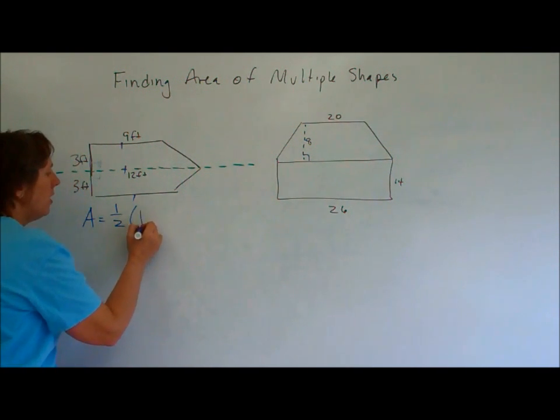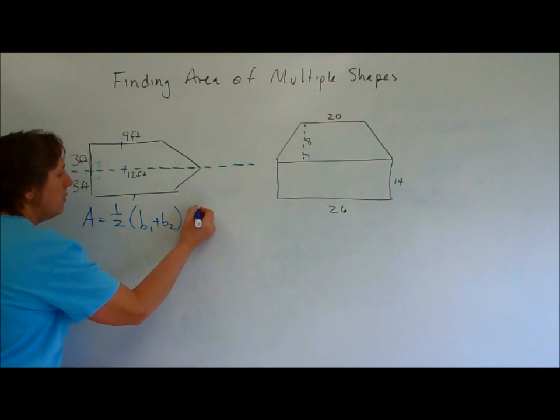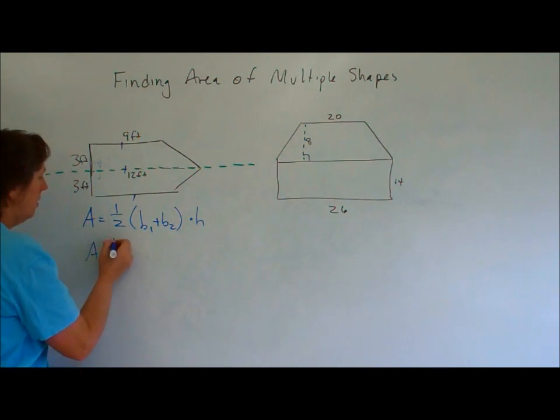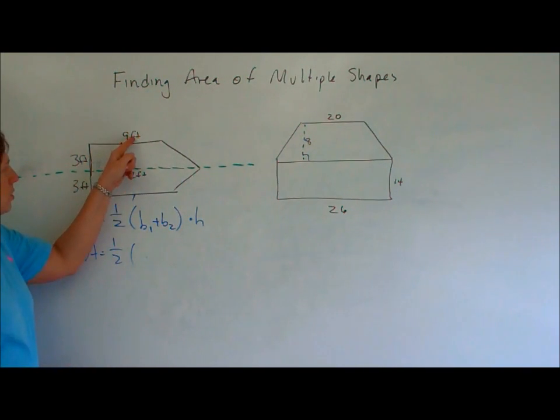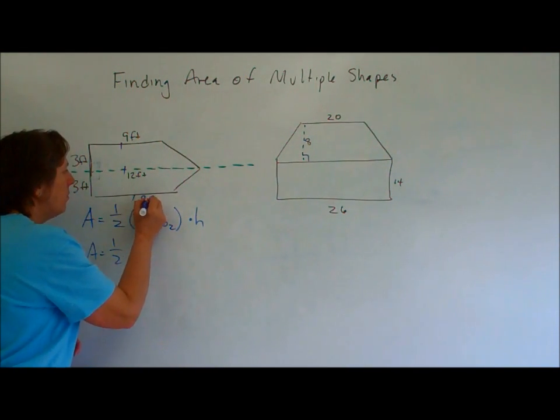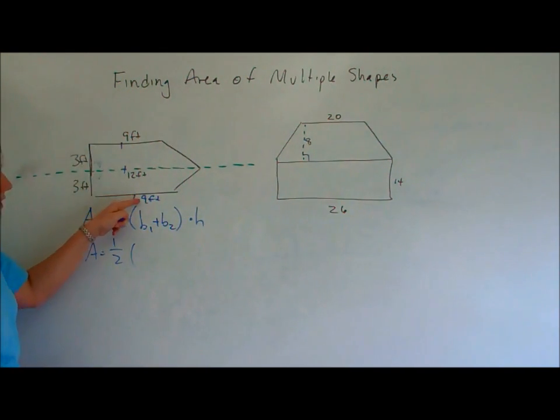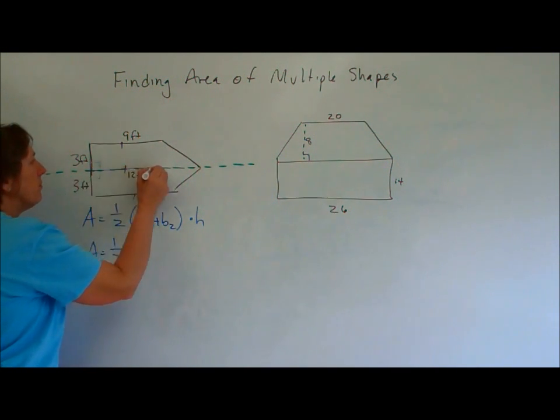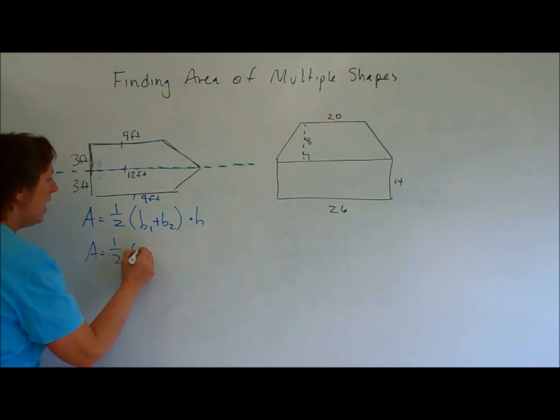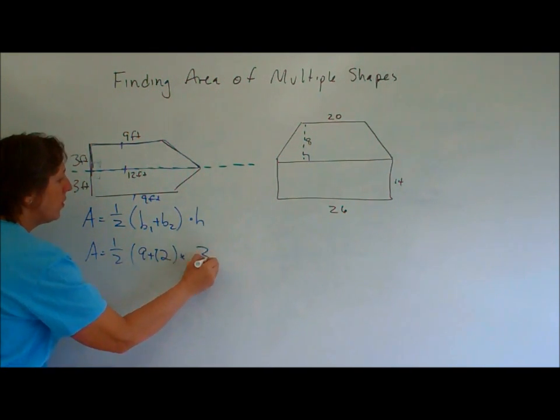So we start off and we must write our formula first. One half times the quantity of b sub one plus b sub two times h. So our bases are nine and twelve. What do you think this measurement is? It's not twelve. Yeah, it's nine feet. So we'll go ahead and put that in. So b sub one, we don't go nine and nine because that's not a trapezoid. That's a five sided figure. That's a pentagon. One, two, three, four, five. So we have to do this one.